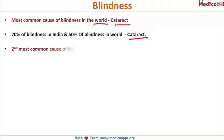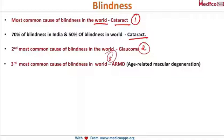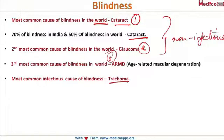The second most common cause of blindness in the world is glaucoma, and the third is age-related macular degeneration (ARMD). Notably, all three of these are non-infectious causes — non-infectious causes are the leading causes of blindness. The most common infectious cause of blindness is trachoma.